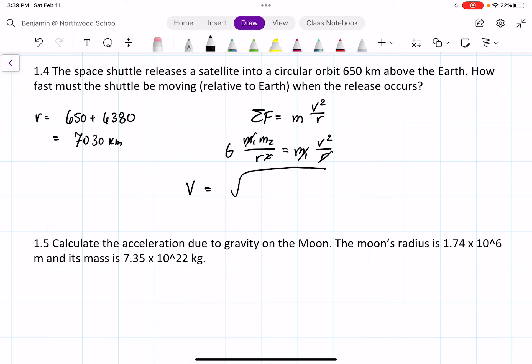Which is equal to the square root of G m₂ over r, where m₂ is the mass of the Earth and r is the radius we just determined. So if we plug in the values we know: 6.67 times 10⁻¹¹ times 5.98 times 10²⁴ divided by 7030 times 10³. We get a velocity of 7532 meters per second.